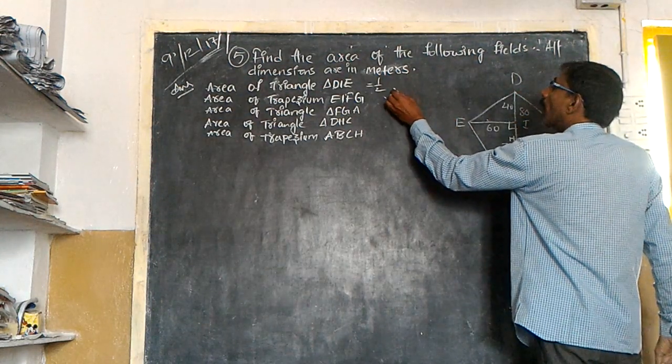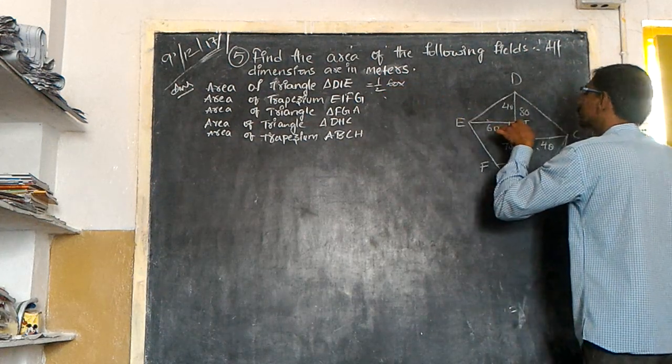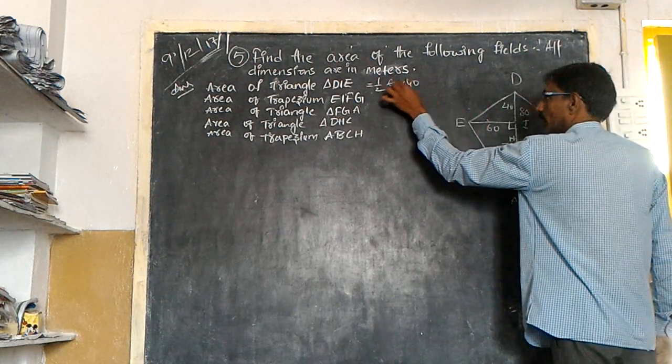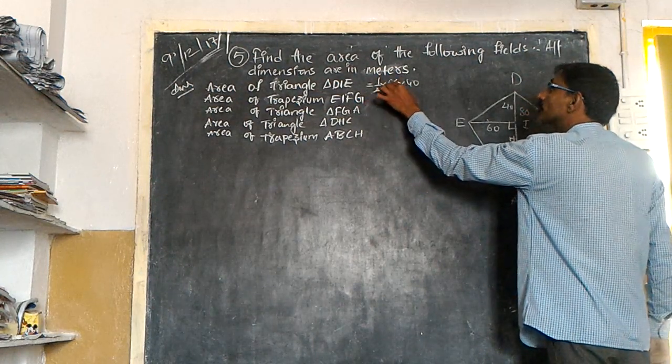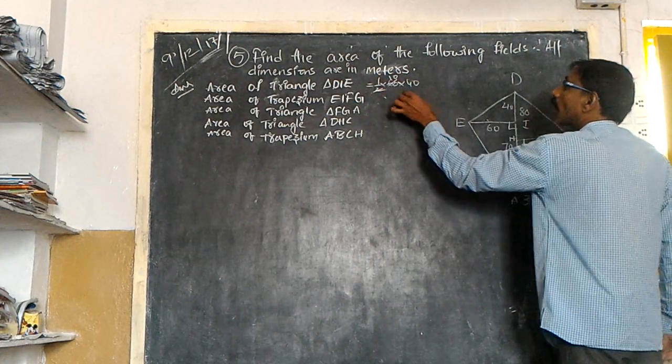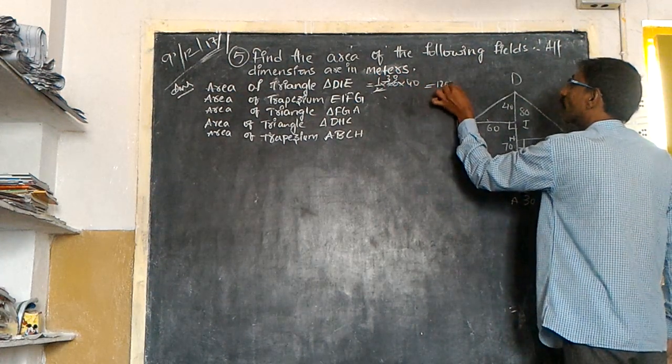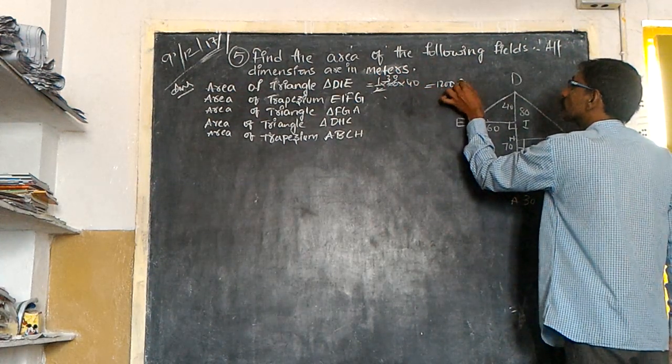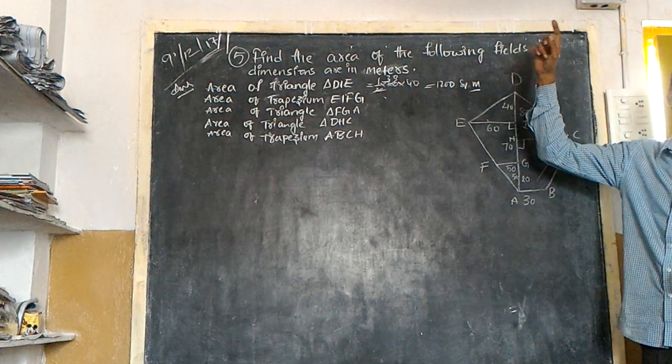So half, base is 60 into height 40. This is in denominator. Keep in mind. How many times will it go? 30 times. That is equal to 1200 square meters. Because the measurement is given in meters.